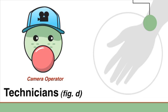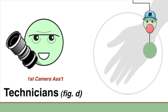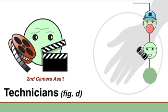consisting of the aforementioned camera op and their two assistants, the first camera assistant, who is in charge of focusing the camera and is thus also known as a focus puller, and a second camera assistant, who is like an assistant to the first assistant.